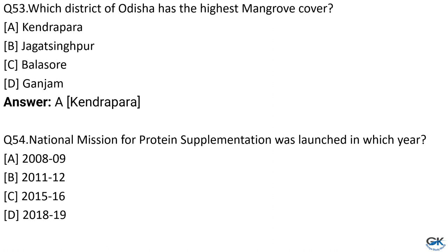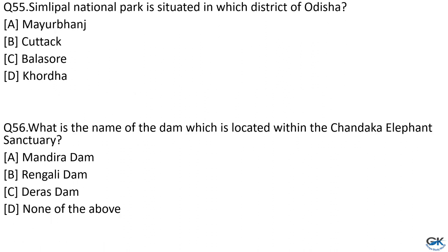Question No. 54: National Mission for Protein Supplementation was launched in which year? Option A: 2008–09. Option B: 2011–12. Option C: 2015–16. Option D: 2018–19. The answer is Option B, 2011–12. Question No. 55: Simlipal National Park is situated in which district of Odisha? Option A: Mayurbhanj. Option B: Cuttack. Option C: Balasore. Option D: Khordha. The answer is Option A, Mayurbhanj.